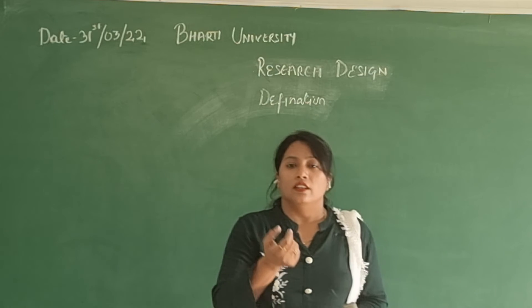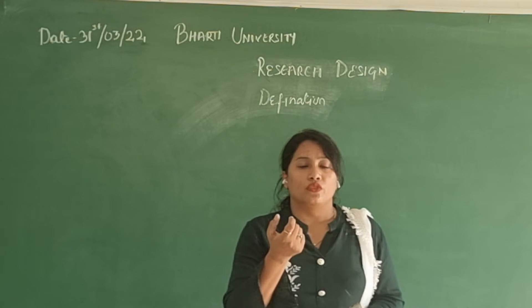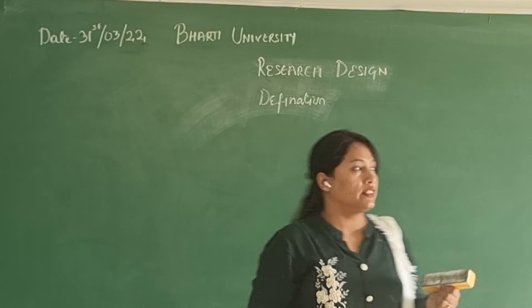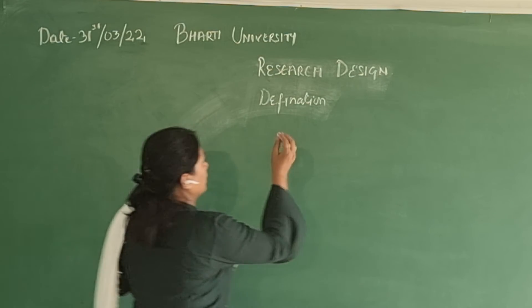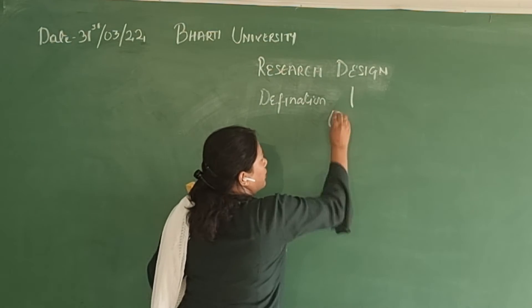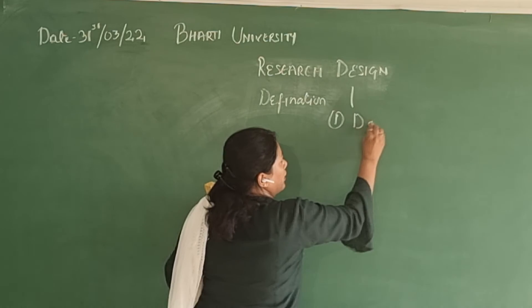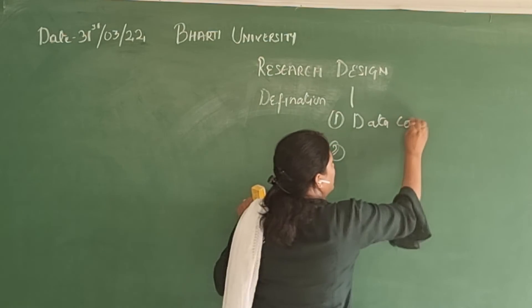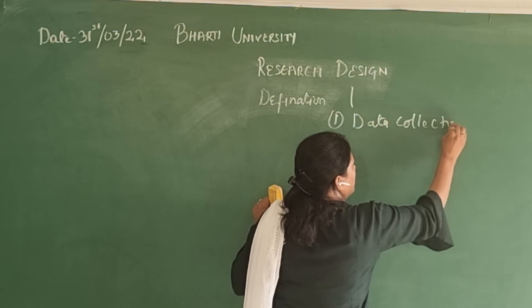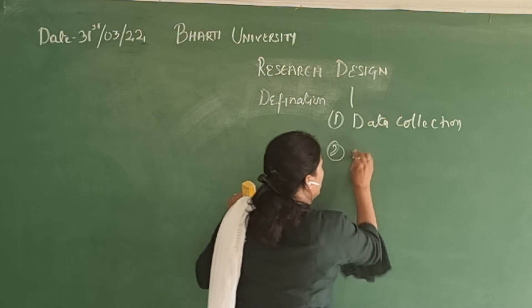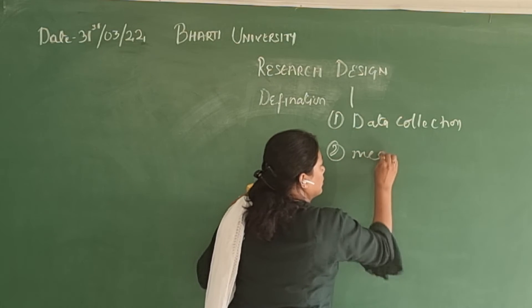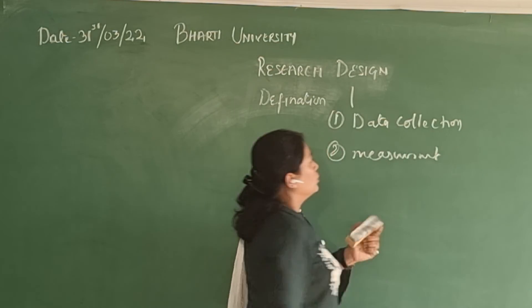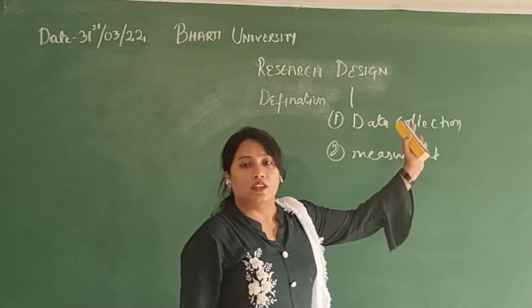There are about three main types of research designs. First is data collection. Second is measurement. Third is determine.